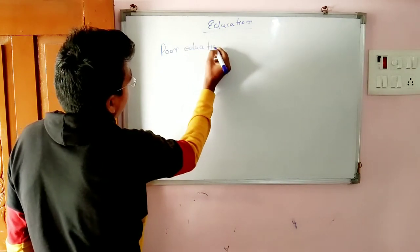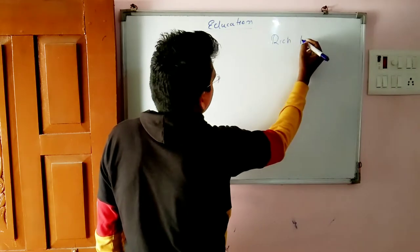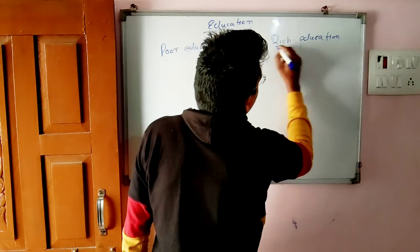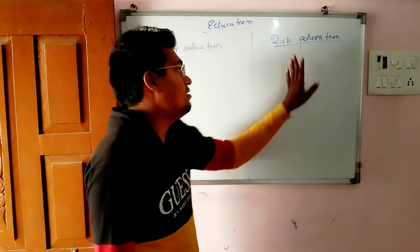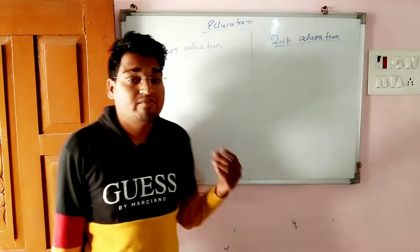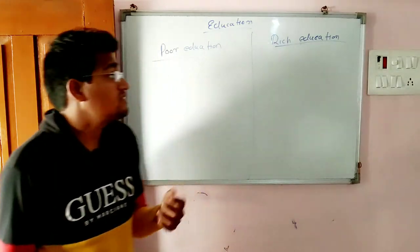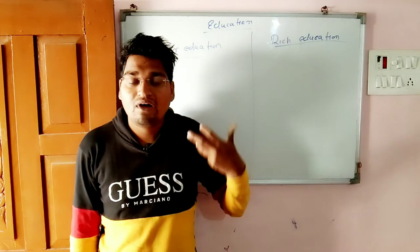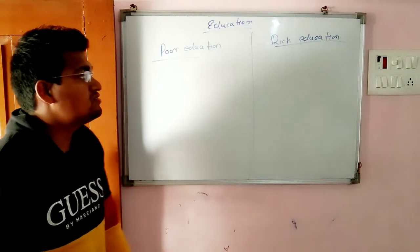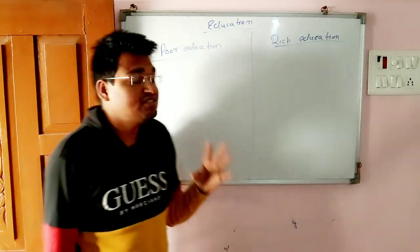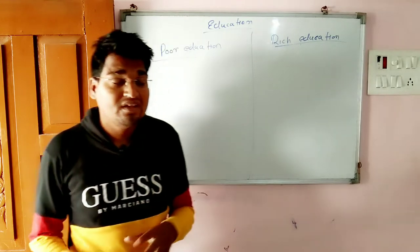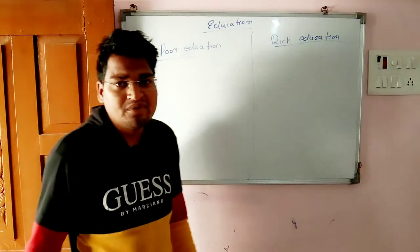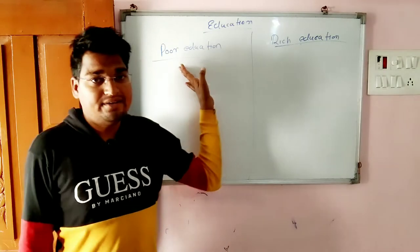Why am I dividing poor education and rich education? Because I think it is very necessary and very important to show what is the condition in our India. That is why, because of these two types of educations, our India cannot go ahead. If you talk about poor education, 65 percent of India's population lives in village areas.